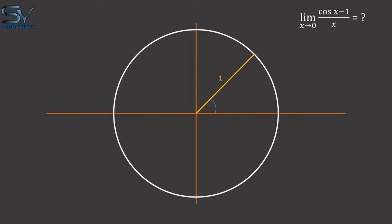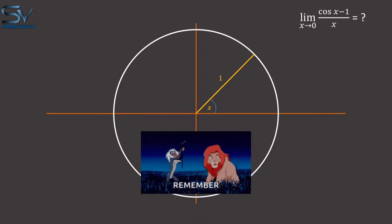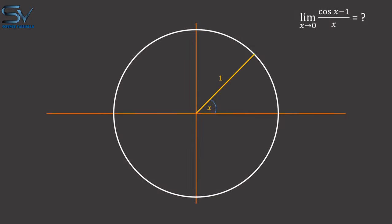This line forms an angle of x to the horizontal axis. Remember that x is measured in radians. The cosine of x is represented by this horizontal blue line.